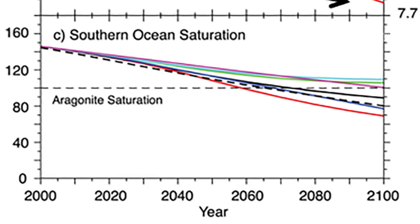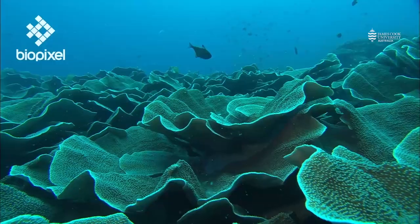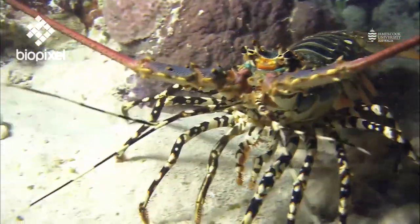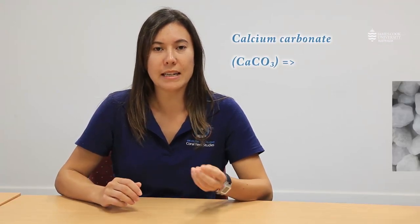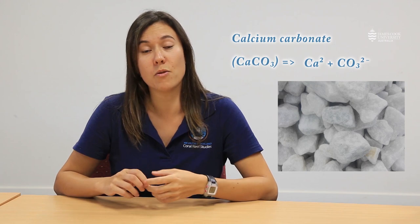The saturation state of seawater is measured with respect to calcium carbonate. Calcium carbonate is a really important building block of marine animals — they use it to make their shells and skeletons, including things like corals, the main reef builders, molluscs like snails and clams, and crustaceans like crabs. This calcium carbonate is a chalky limestone structure made up of calcium ions and carbonate ions. Common forms of calcium carbonate include calcite and aragonite. What we can see on this graph is that this carbonate ion — one of the key building blocks of calcium carbonate — actually decreases in the oceans over time.